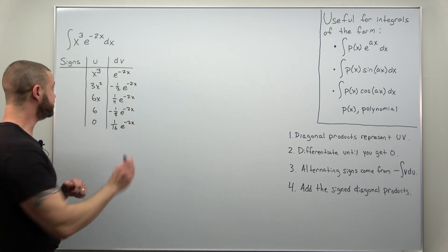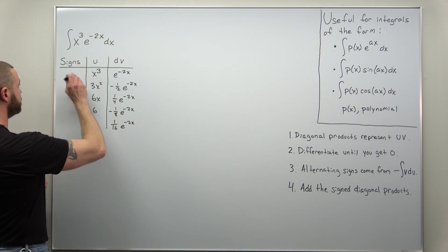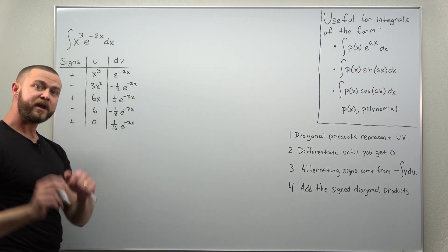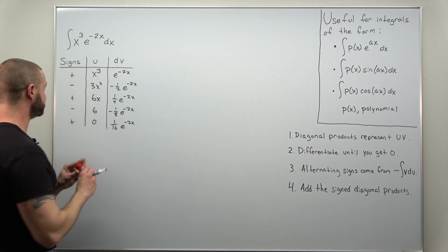All the work is done. We just account for the sign starting with a positive and then alternate from there: plus, minus, plus, minus, and then plus. And we extract our answer as the product of the signed diagonals.